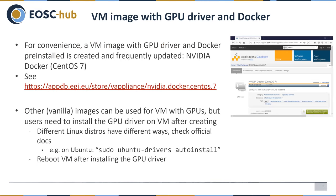For convenience, we have created a VM image with GPU drivers and Docker container support, so when you create a VM you don't need to install anything additionally. The image information is available in AppDB and is included in several VO image lists. If you want to use your own VM image, you can, but you'll need to install the GPU driver. On Ubuntu, just run the command sudo ubuntu-drivers autoinstall and it will install the GPU driver for you. After installing, you need to reboot the VM to activate the driver.